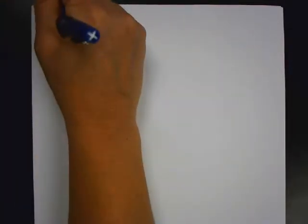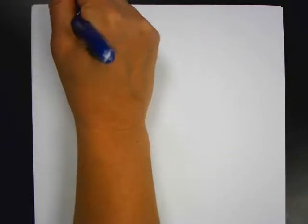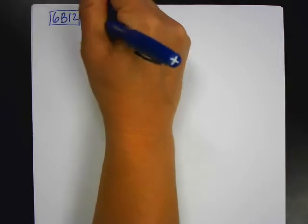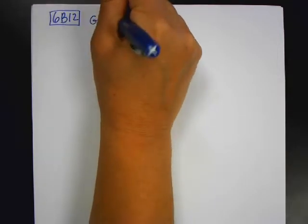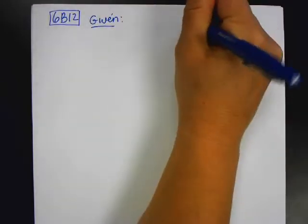Alright, so we're going to look at practice B, we're on chapter 6, practice B, and we're going to do problem 12. So the first thing we're going to do is write our given and write our find.